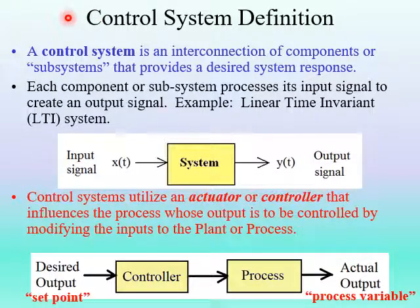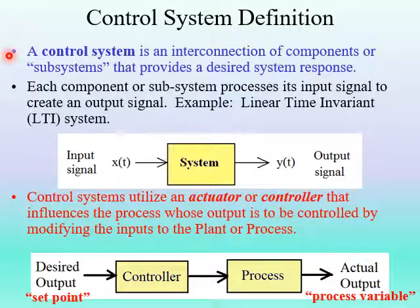Let's look at a definition of what a control system is. A control system is an interconnection of components or subsystems that provides a desired system response. In other words, a control system is designed to control the output of the system. Each component or subsystem processes its input signal to create an output signal.